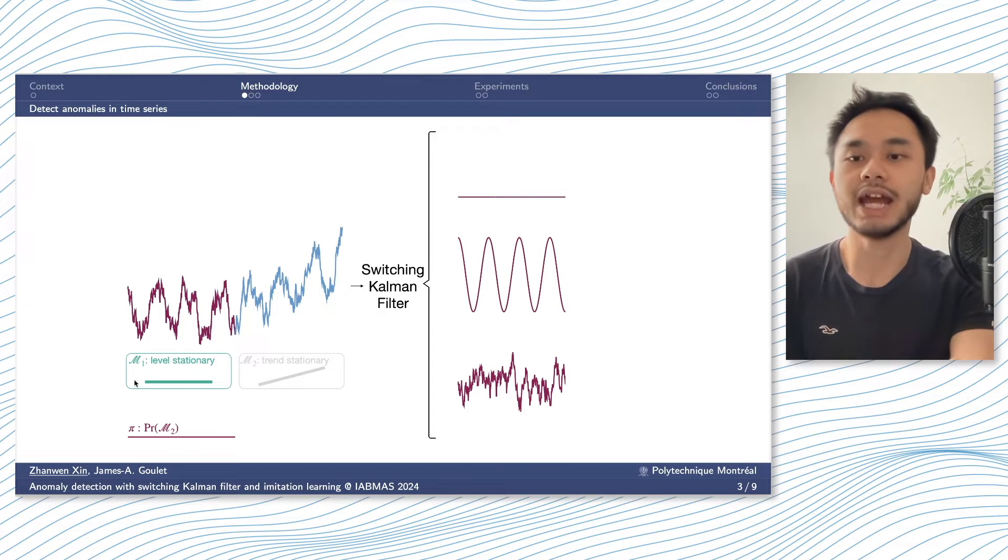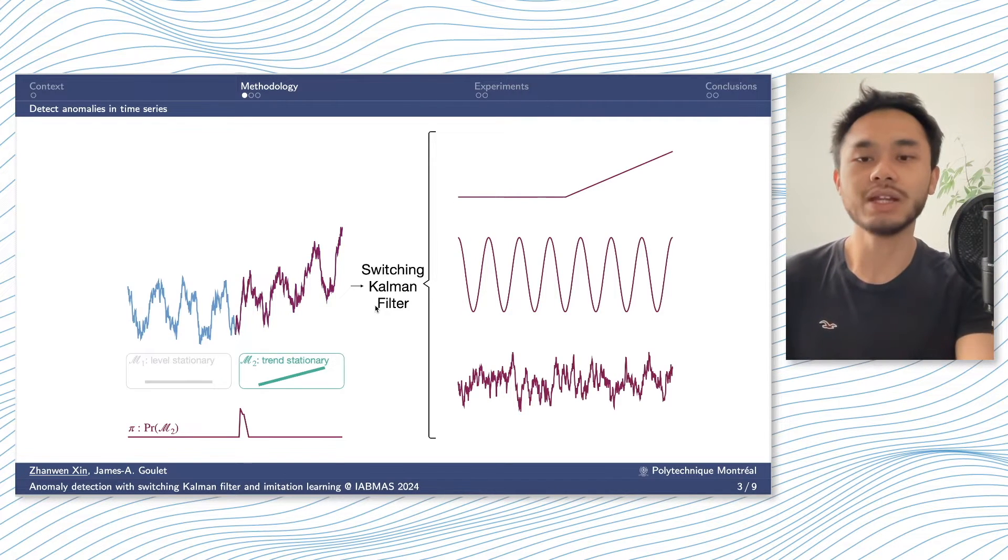For the first half of the time series, where the level is stationary, model 1 would dominate the analysis. It will extract the hidden states, and when it goes to the second half, the level stationary model can no longer give precise prediction. So the trans-stationary model would dominate. By using switching Kalman filter, we will have a probability of region switch, pi, that could estimate the probability of each model. The probability of region switch jumps after the anomaly happens.